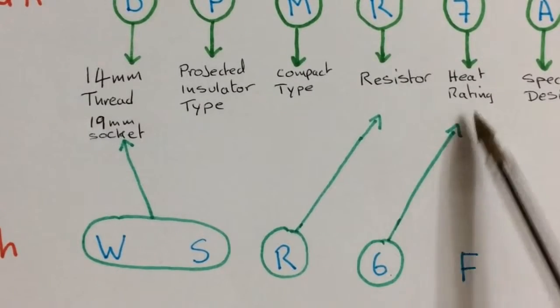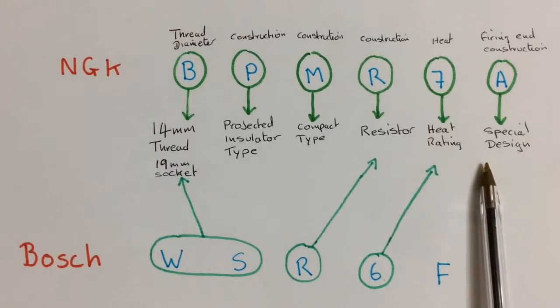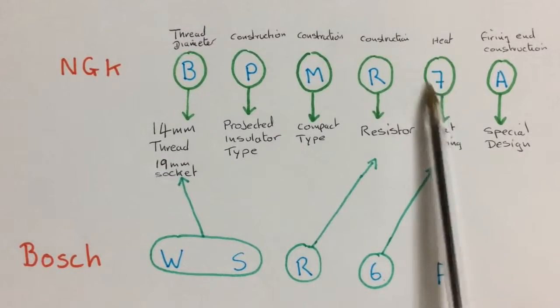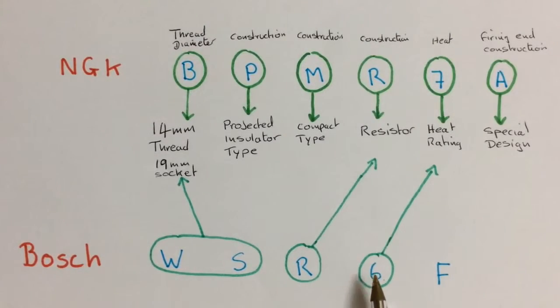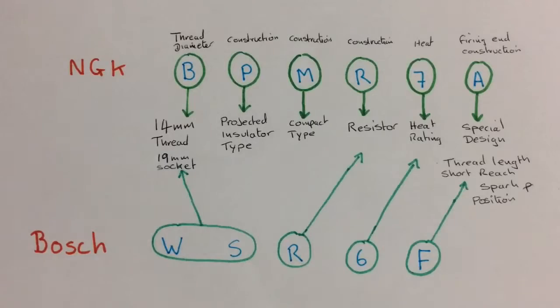The number 6 relates to its heat rating. Like we said with the NGK from 2 being hot, 10 being cold. 7 was a sort of mid-range. It's similar with the Bosch. We've got a 6. So it's still a mid-range. In Bosch terms.